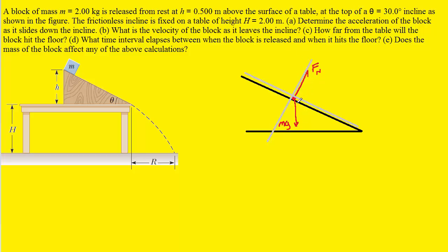To do that, we're going to draw the x and y components, beginning with the y-component, which will point along this y-axis. We'll notice that the y-component forms an angle with the gravitational force — that angle will be marked as theta. It turns out that angle theta is the exact same angle as that of the incline. Since the y-component is adjacent to that angle, we're going to use the cosine. So that y-component is going to be mg times the cosine of theta.